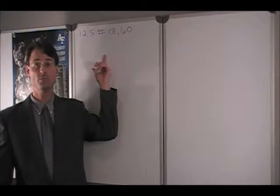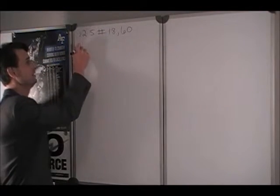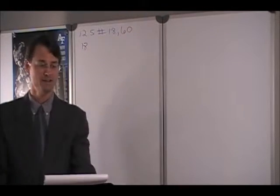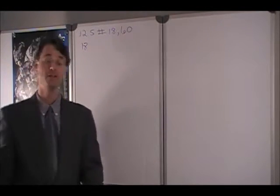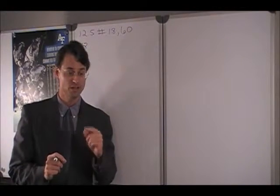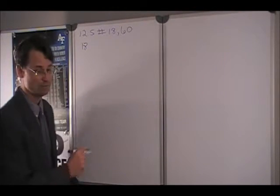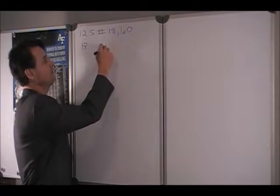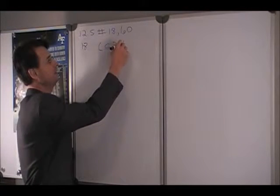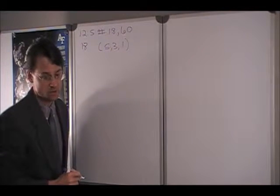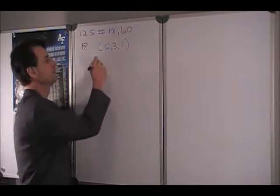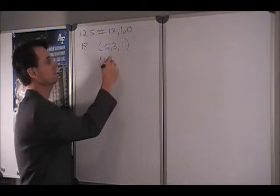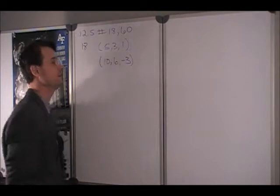Today, we're having a look at section 12.5, number 18 and number 60. Let's start with number 18, which asks us to find parametric equations for the line segment. Take care because I'm changing the numbers a little bit so you still get the benefit of solving these at home. So we have two points. Let's call one (5, 3, 1). Let's call the other one (10, 6, -3).